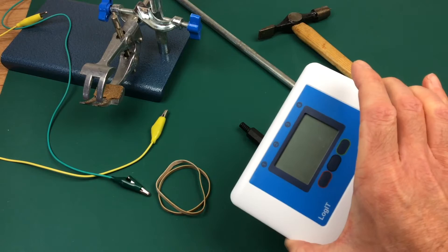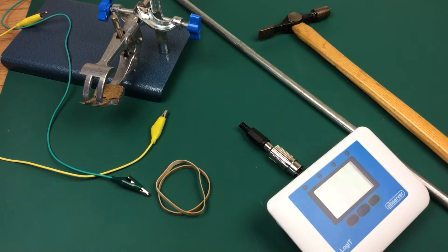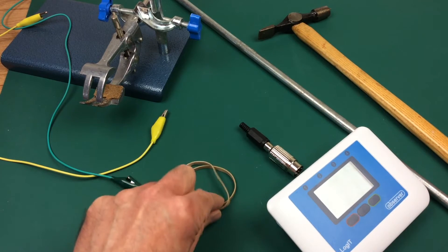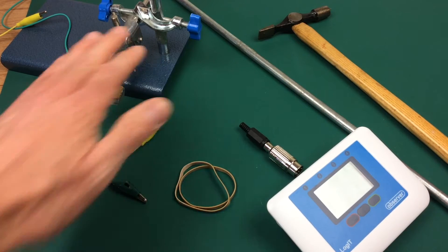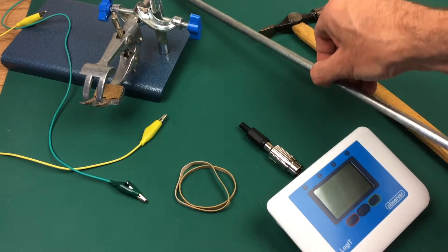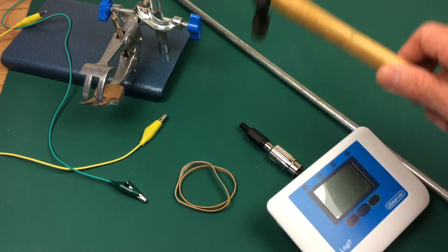You need a Logit observer, two elastic bands, two cables with crocodile clips, a clamp stand, your test metal rod, and a hammer.